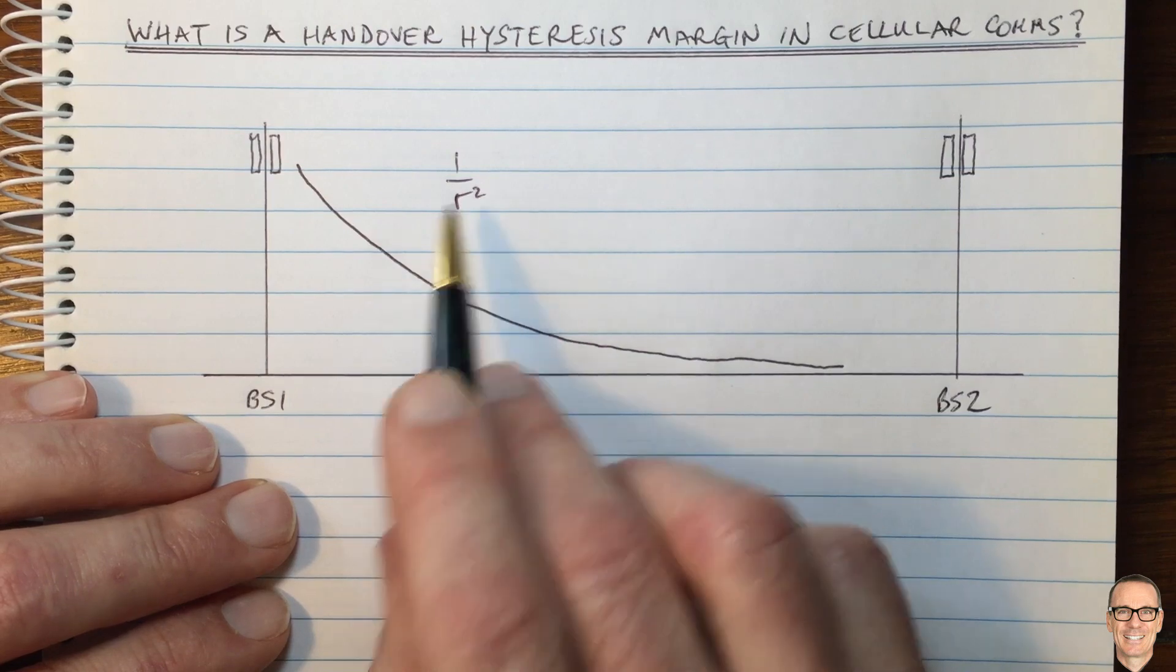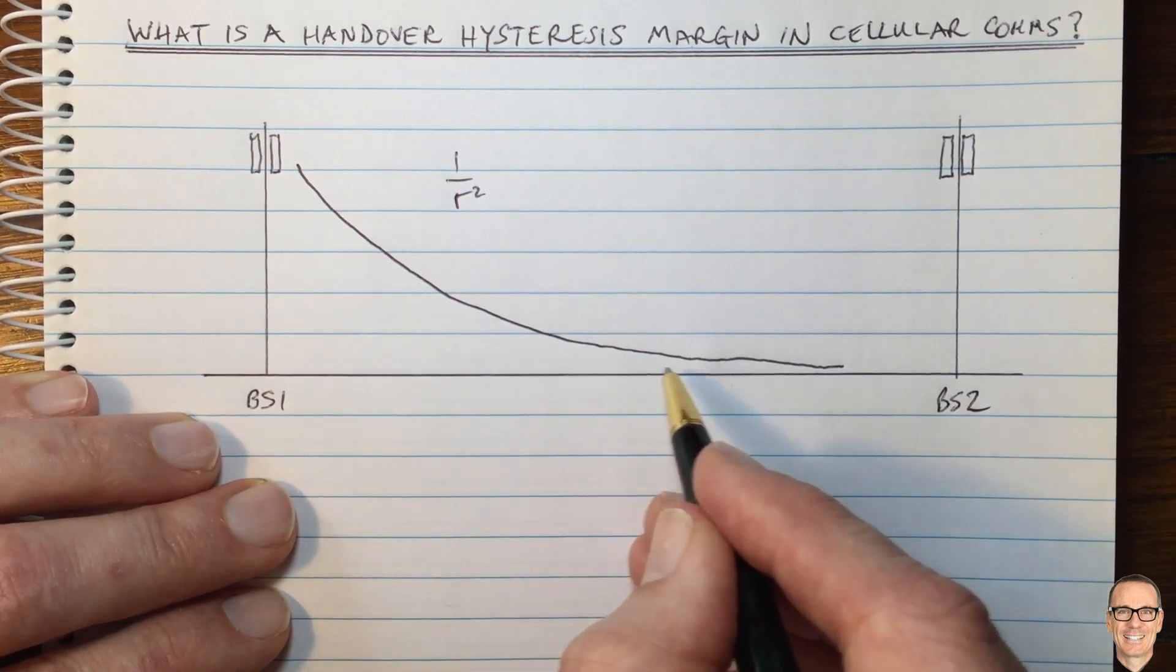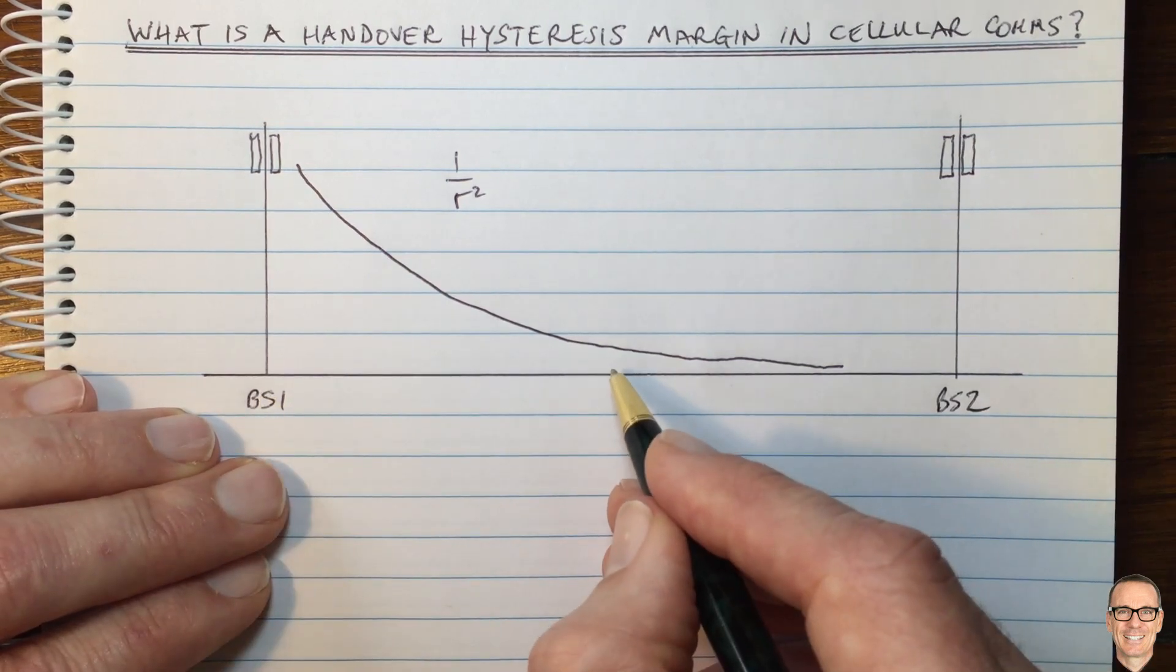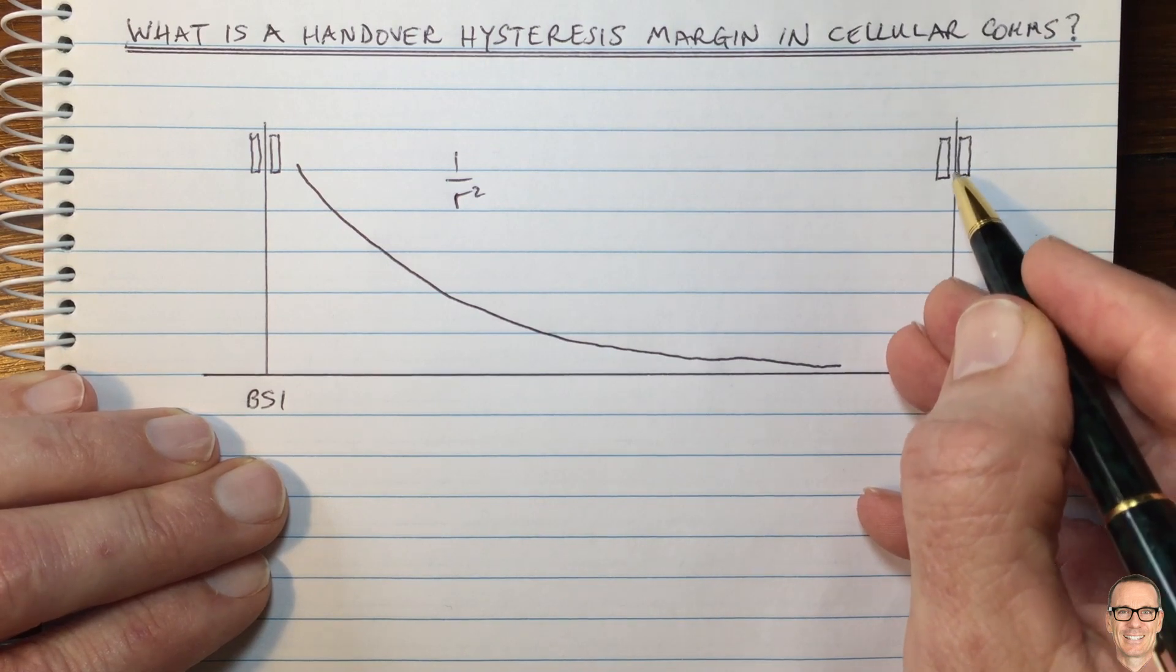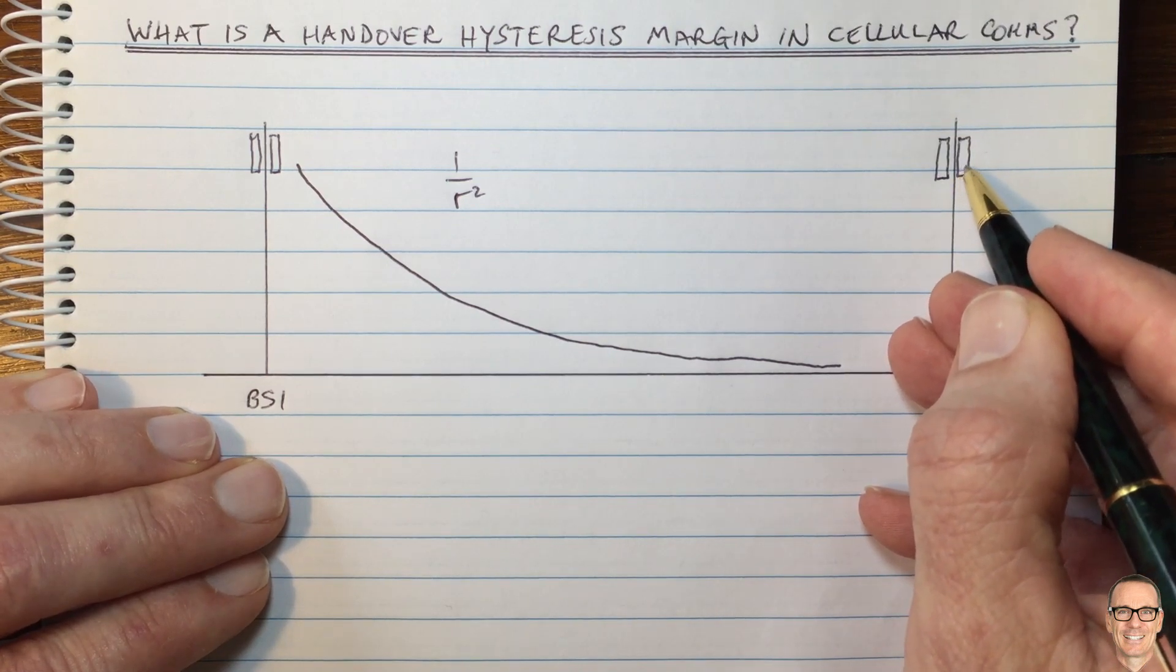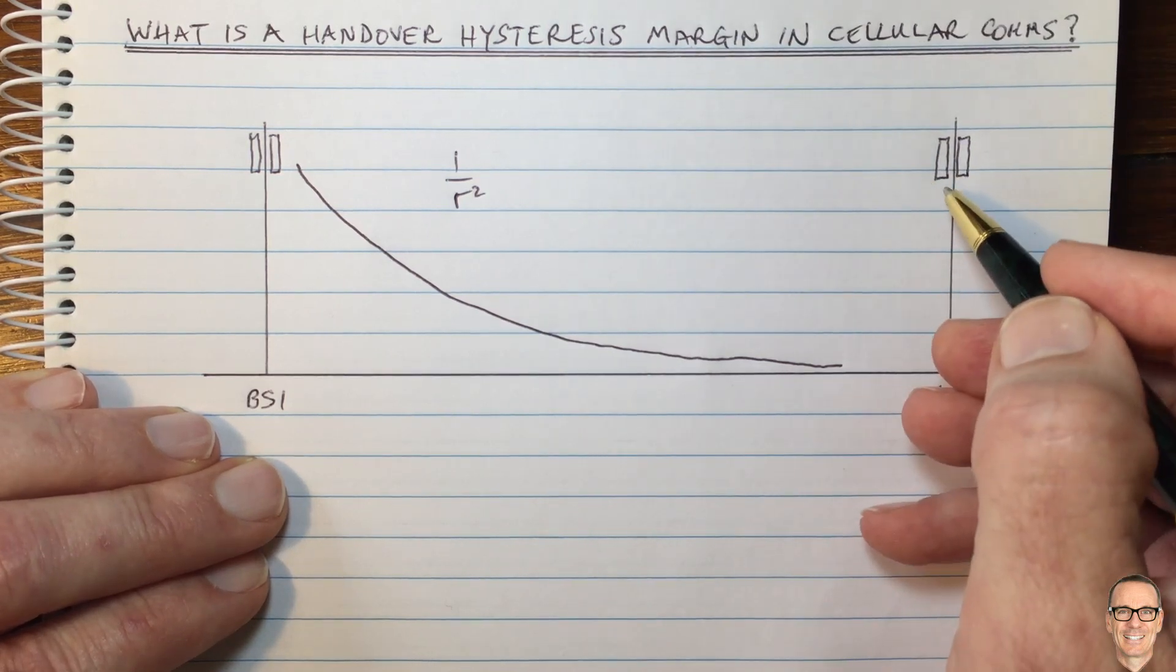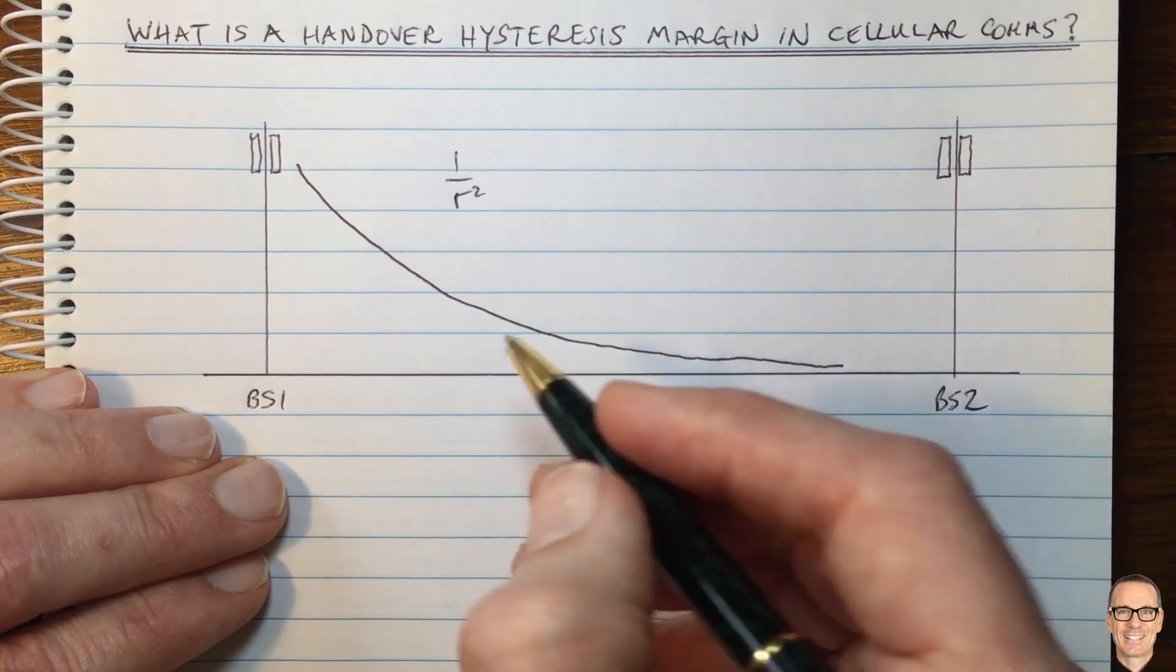But let's just take it as one on R squared, but it certainly goes down. And so as you're moving away from this base station, you're going to start being able to start connecting to another base station. It will be on a different frequency band. So you have to do some searching on other frequency bands, and then you'll find that you can make a connection. And this base station will start communicating with you.